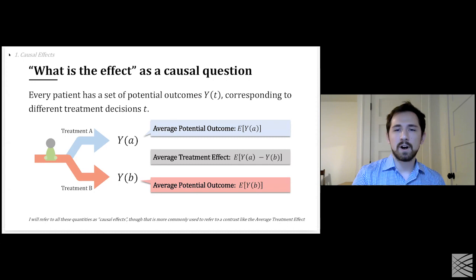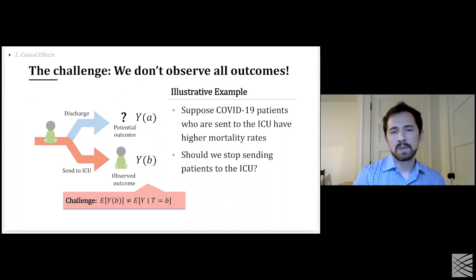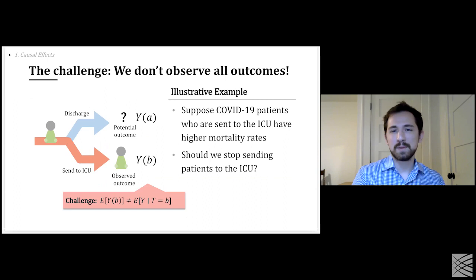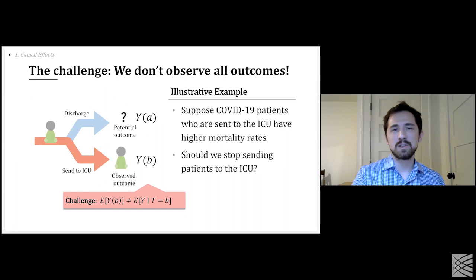I'm going to call the following things causal effects: one being the average potential outcome for a given treatment over the whole population, and the other being something like the average treatment effect. The challenge of course is that we don't observe all outcomes in our data, or at least we don't observe all outcomes for all patients.